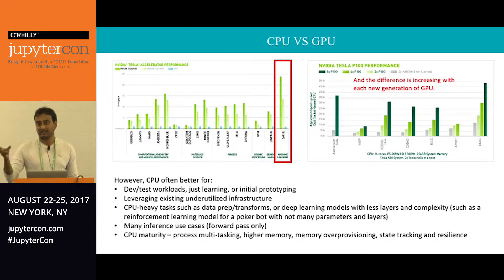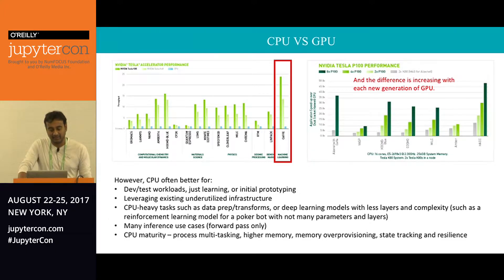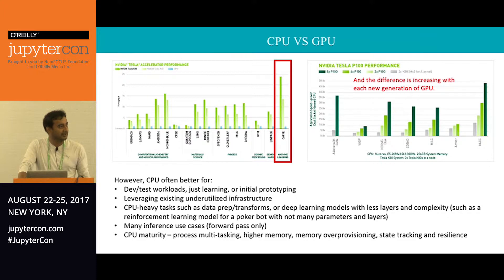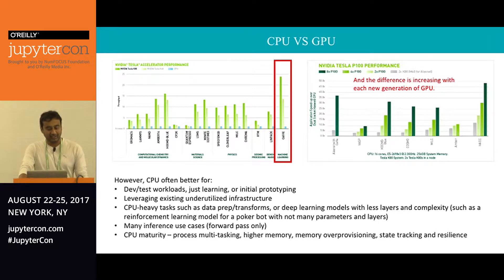The new Volta GPU will have a tensor unit that people can leverage directly for convolutional neural nets — some functions are baked into hardware. CPUs are still good for certain things: dev and test, initial prototyping, using existing infrastructure. Most data prep and transformations are still done on CPUs, and inference is often done on CPUs when not at massive scale. CPUs have much more maturity, with multitasking, more memory, virtual memory, state tracking, and resilience.